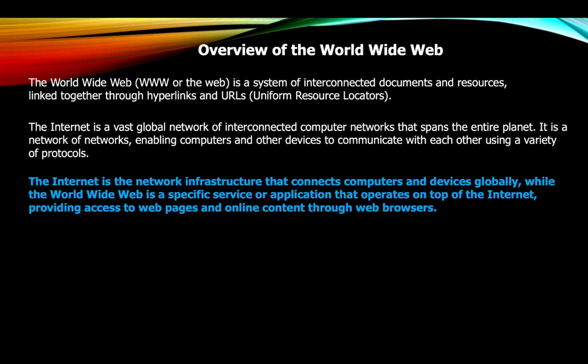Overview of the World Wide Web: the World Wide Web, also called WWW or the web, is a system of interconnected documents and resources linked together through hyperlinks and URLs, accessed through browsers such as Brave, Chrome, or Mozilla. The internet is a vast global network of interconnected computer networks spanning the entire planet, enabling computers and devices to communicate using a variety of protocols.